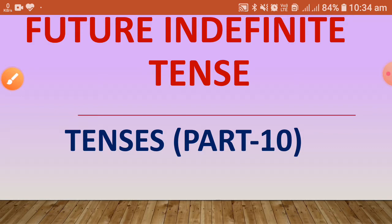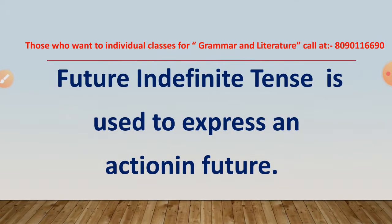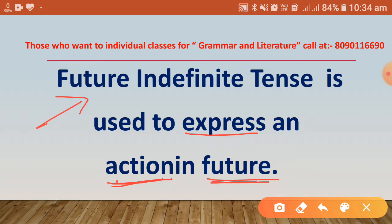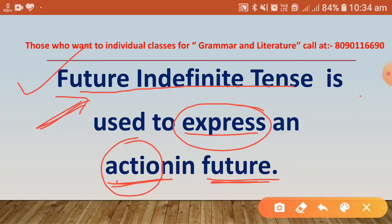Let us start. First of all we will see where Future Indefinite Tense is used. Future Indefinite Tense is used to express actions in future — those actions which are about to happen in coming time, in future time. Those are translated in Future Indefinite Tense.